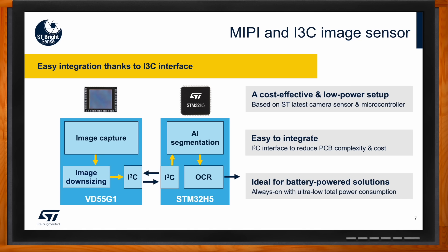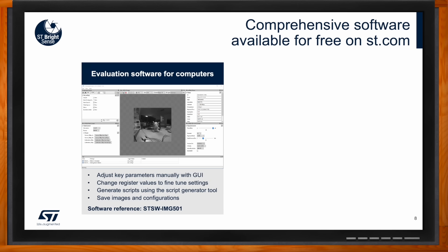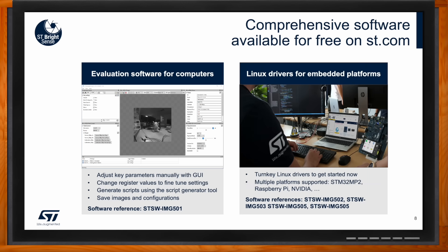What about the software? Our software is available for free on st.com. You'll find our evaluation GUI software to use with our main board and a pro module. If you want to work with embedded processing boards like Raspberry Pi or STM32 MP2, you'll use our pro module board and the multiple Linux drivers available on our website. We are also currently working on STM32 N6 drivers to support our image sensors — this new MCU was released a few weeks ago and we look forward to announcing those drivers.